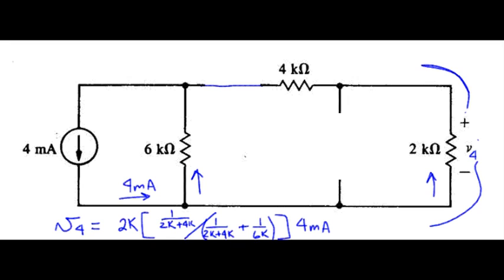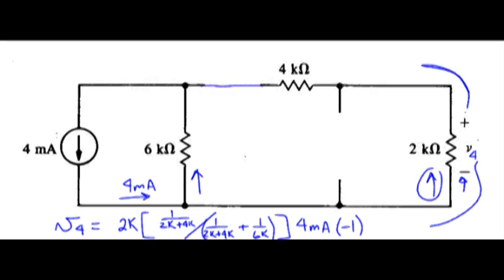And then we also need to note that this current is entering the negative terminal of our defined voltage, so we need to stick a negative sign in there since it's not following passive sign convention. So the voltage due to the 4 milliamp source acting alone is minus 4 volts.